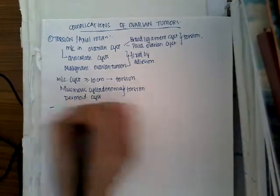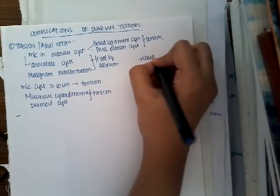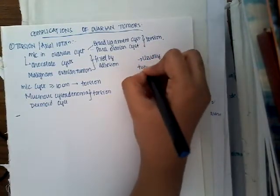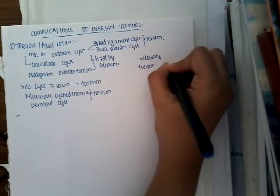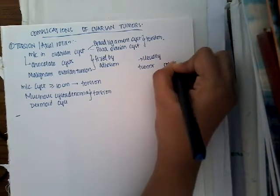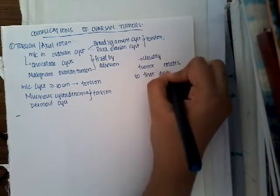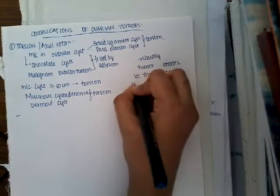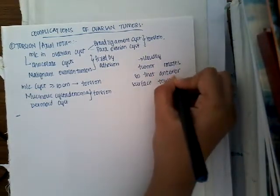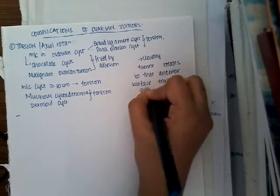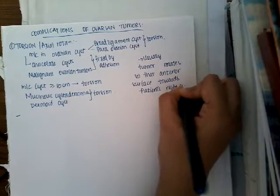Regarding the direction of rotation, the tumor rotates such that the anterior surface of the tumor turns towards the patient's right side — that is how torsion occurs.